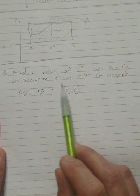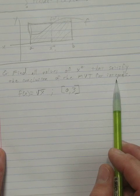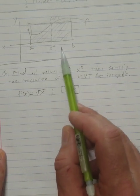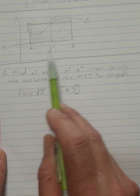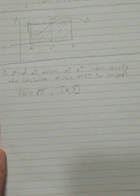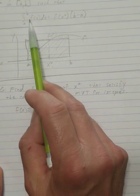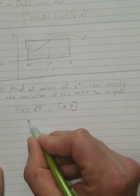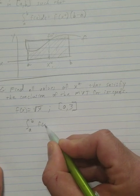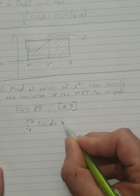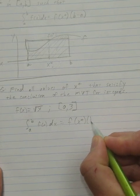Let's look at this example: find all values of x-star that satisfy the conclusion of the mean value theorem for integrals. So I want to find what is this value x-star — that value between a and b. According to the mean value theorem for integrals, the integral from a to b of f(x) dx is equal to f(x-star) times b minus a.